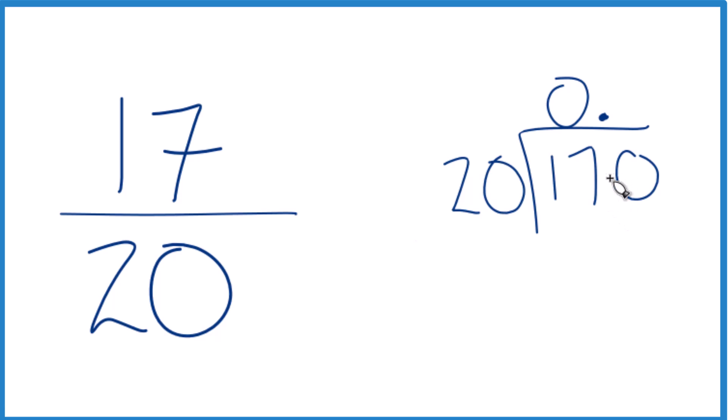So now, see, 8 times 20 would be 160, and subtract, that gives us 10.